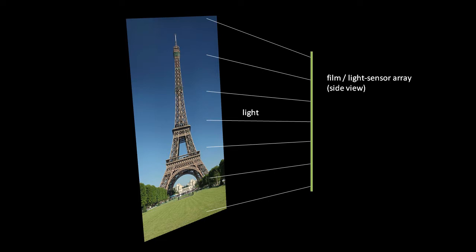To get an image from the world, what we cannot do is simply hold a film or light sensor array in front of the scene. We need the light from respective parts of the scene to hit the corresponding parts of the surface. What happens in the real world is that light is bouncing all around, such that light from all parts of the scene hits all parts of the surface, adding up to far too much light — producing a blank, all-white image. This is why cameras and the human eye have lenses.